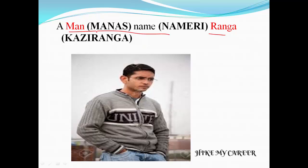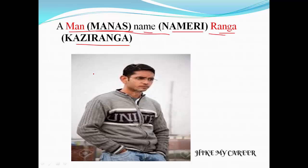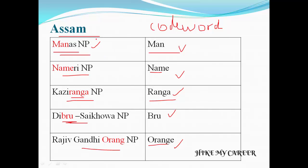So: MAN means Manas National Park, NAME means Nameri National Park, RANGA means Kaziranga National Park, BLUE means Dibru-Saikhowa National Park, and ORANGE means Rajiv Gandhi Orang National Park. These are the national parks for Assam state. Code word: a man named Ranga, he likes blue coffee and orange.